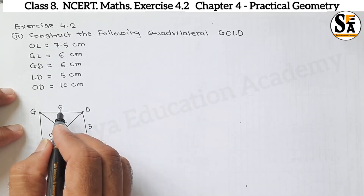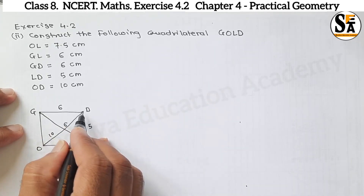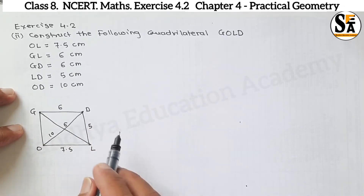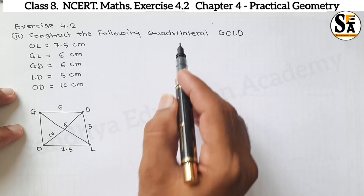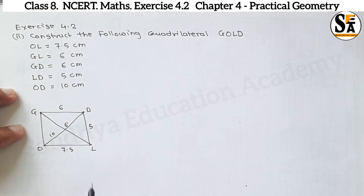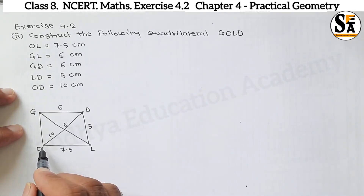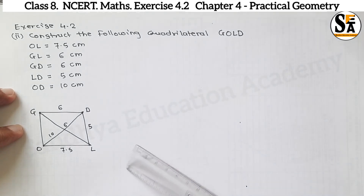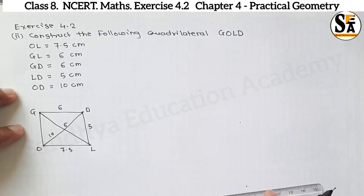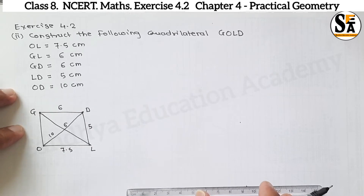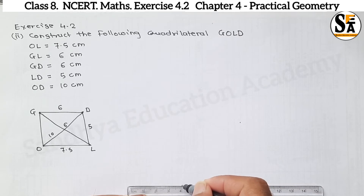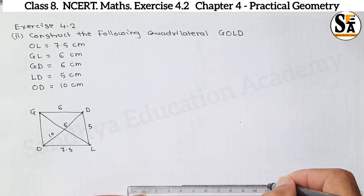Dimensions of three sides and two diagonals are given. With the help of this we will draw quadrilateral GOLD. Let's start with OL. OL is given 7.5 cm, so we will draw OL as 7.5 cm.